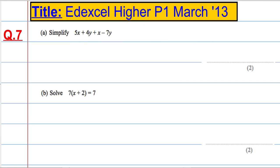Okay, so question 7, a little bit of algebra here. We're asked part A to simplify 5x plus 4y plus x minus 7y.